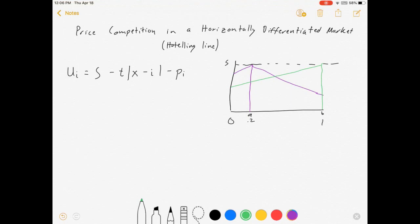And so what we have here is people on this side of the line, the purple utility line is higher than the green utility line. These people get more utility from buying from firm A than they do from buying from firm B.